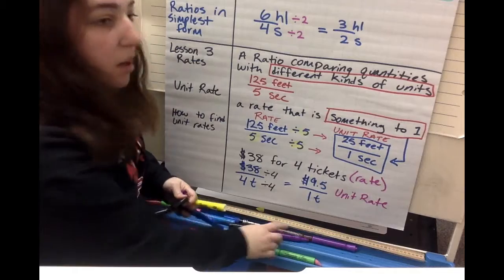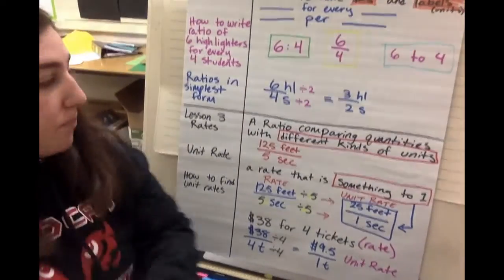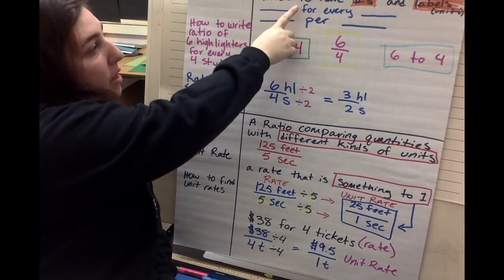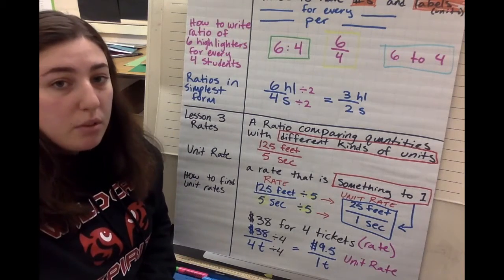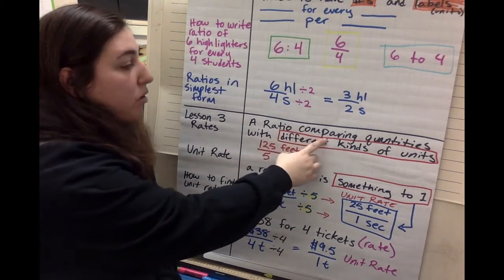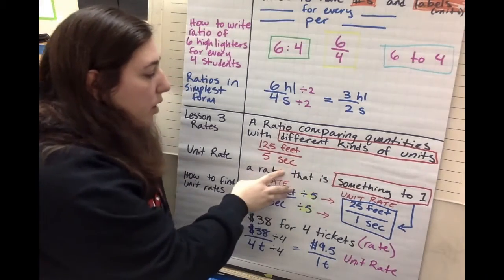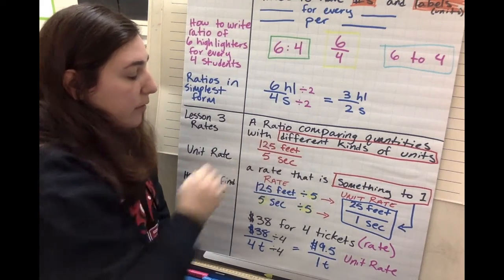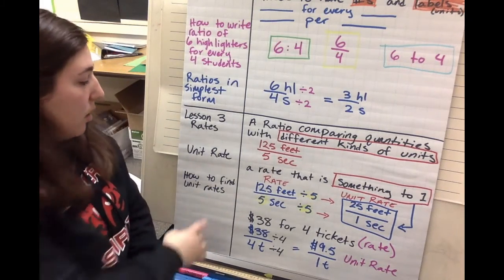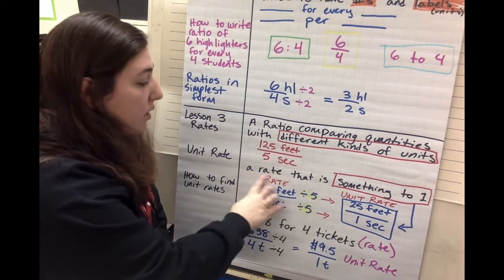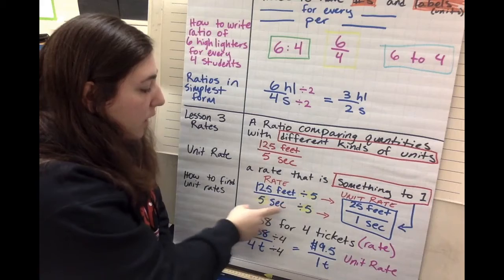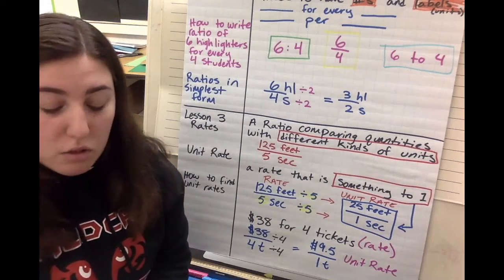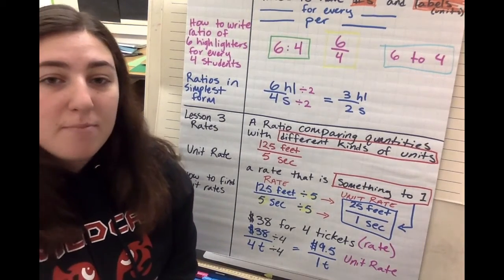Let's do a quick recap. A ratio is a comparison of two quantities that needs to have numbers and labels. A rate is a ratio comparing quantities with different kinds of units. A unit rate is a rate that is something to one — here we had our rate and we changed it to a unit rate. That is two lessons done in one day. Thanks!